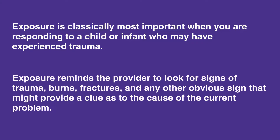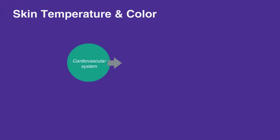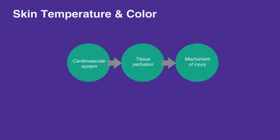Exposure reminds the provider to look for signs of trauma, burns, fractures, and any other obvious sign that might provide a clue as to the cause of the current problem. Skin temperature and color can provide information about the child or infant's cardiovascular system, tissue perfusion, and mechanism of injury.